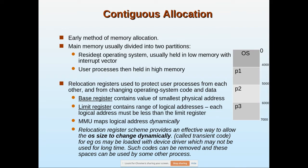Main memory is usually divided into two partitions: one for the operating system and the other for user processes. The resident operating system is usually held in lower memory with interrupt vectors, and user processes are held in the higher part of memory. Here we have process one, process two, process three, and so on, occupying a portion of the memory.